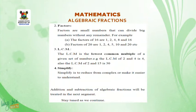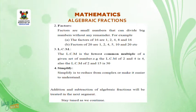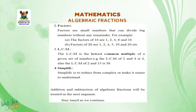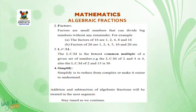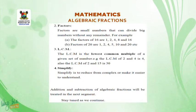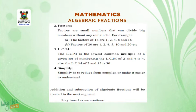2. Factors. Factors are small numbers that can divide big numbers without any remainder. For example, the factors of 16 are 1, 2, 4, 8, and 16. The factors of 20 are 1, 2, 4, 5, 10, and 20, etc.